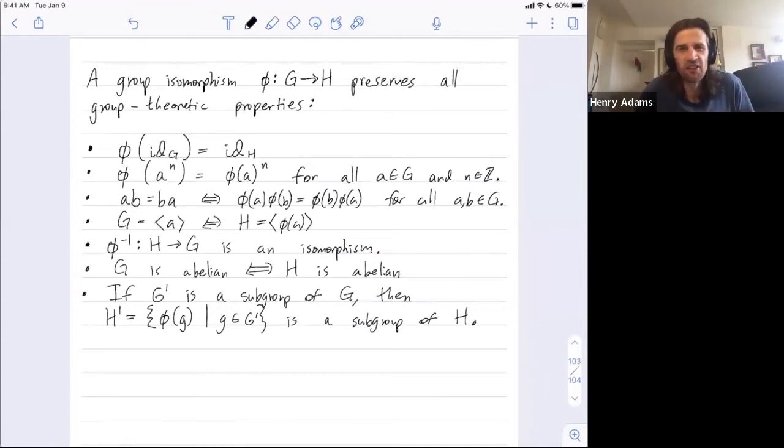Welcome folks. So in the prior video I described many properties that a group isomorphism preserves. Let me list some ways that you could show that two groups are not isomorphic.